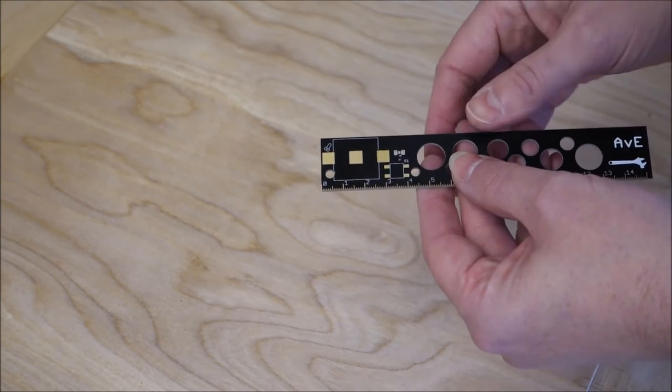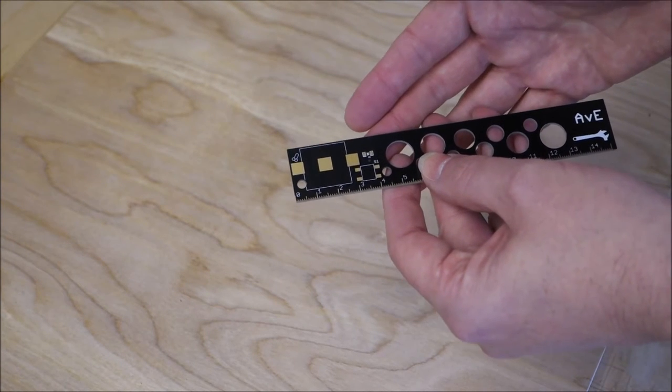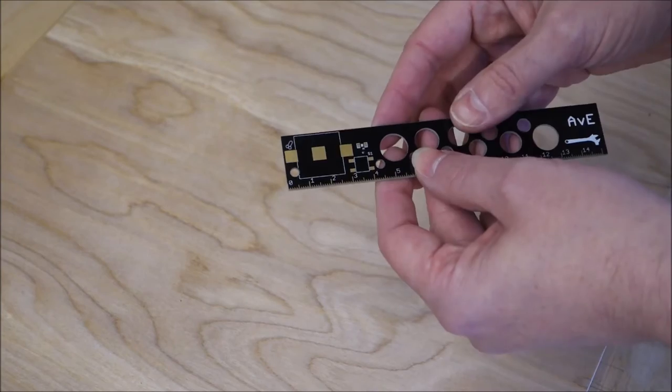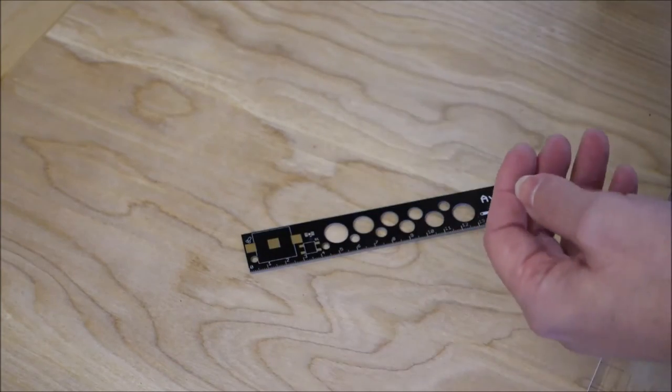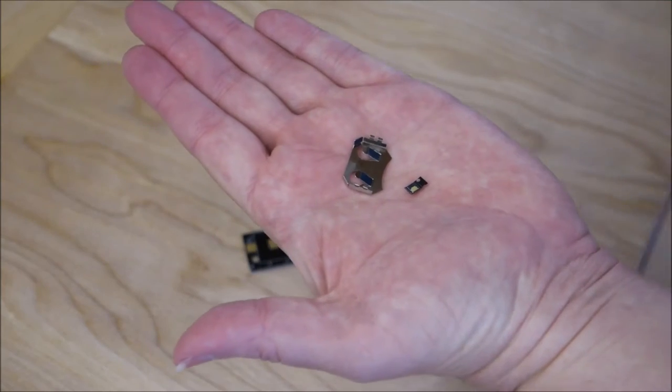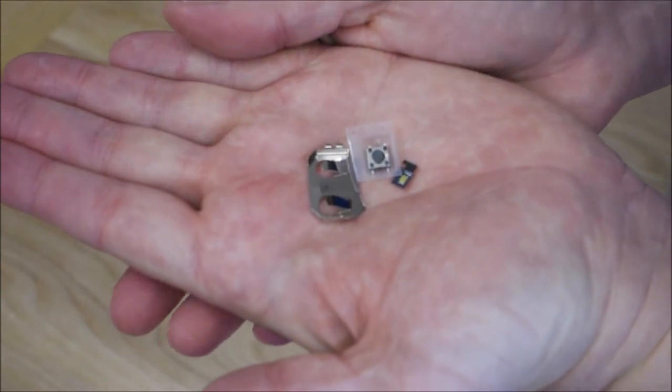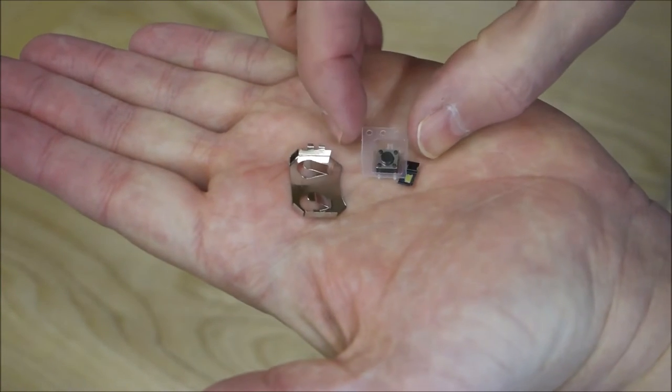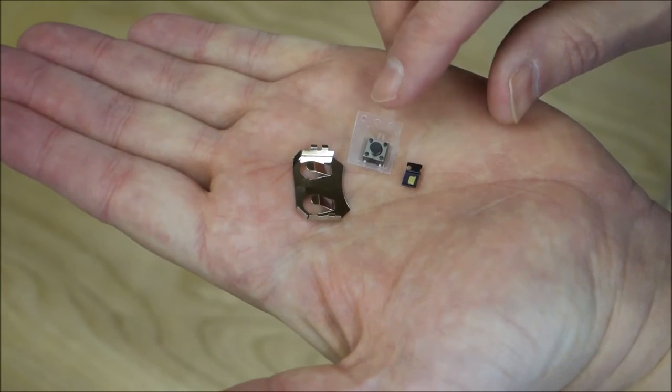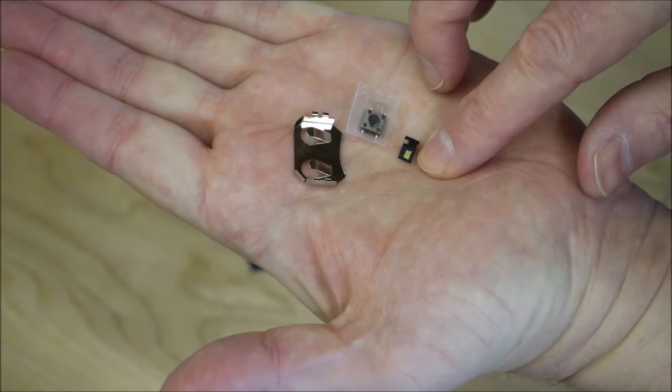You might think why would you have a circuit board on a ruler? Well basically it's a torch or it will be a torch once we put it together. We've got a little battery holder, a tactile momentary switch, and in there is a tiny LED.